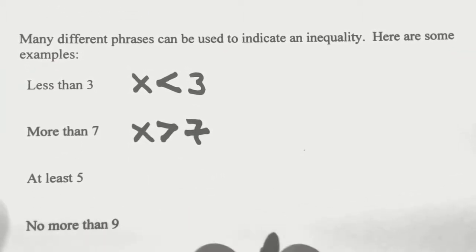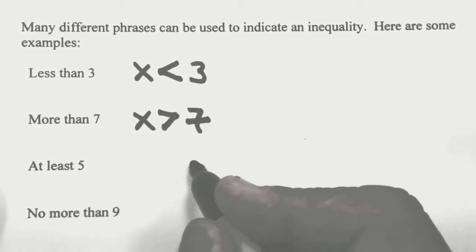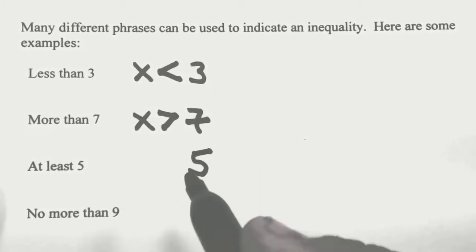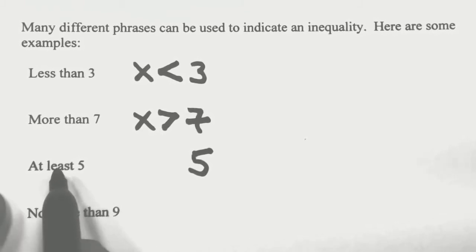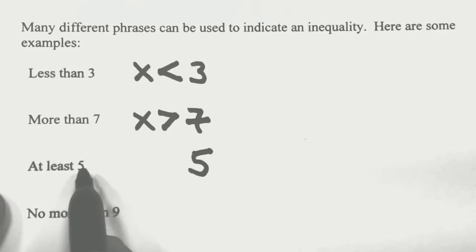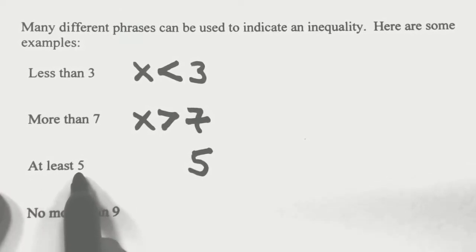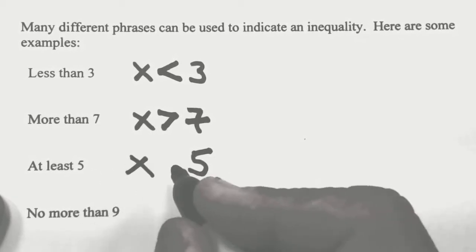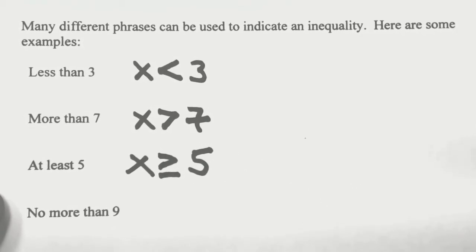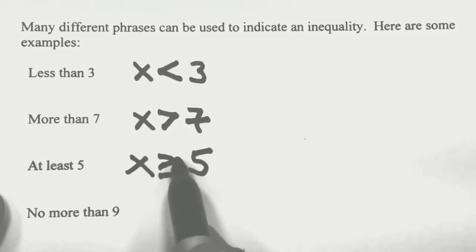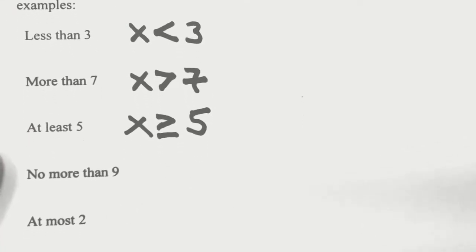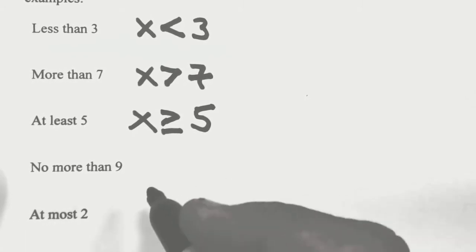At least 5: we're referring to 5, and that's the lowest our value can be. Can it be more than 5? Yes. Can it equal 5? Well, it has to at least be 5, so 5 would work. Can it be less than 5? No. So the ones we said yes to: it can be greater and it can be equal. The greater than or equal to sign, indicating x is larger and also equal.